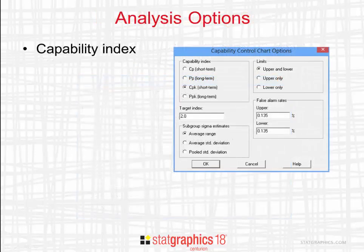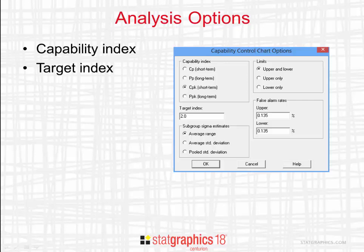The Analysis Options dialog box will then be displayed. You can choose between the indices CP, PP, CPK, or PPK. In the field labeled Target Index, put the value of the target for whatever index you're plotting. This value defines the centerline of the control chart.